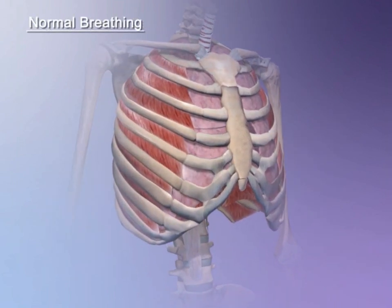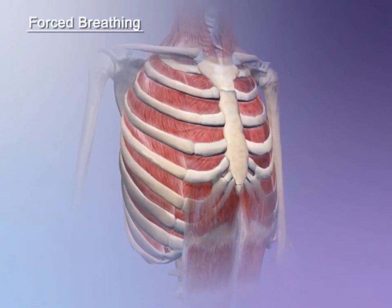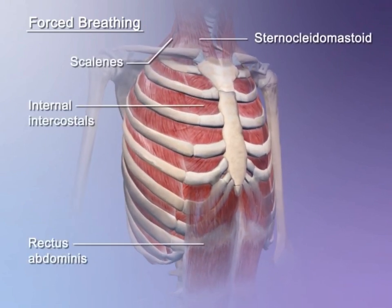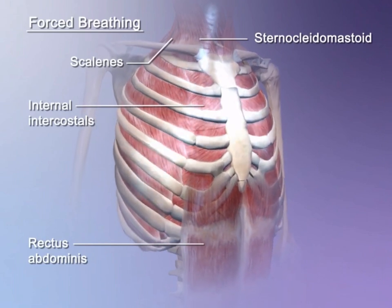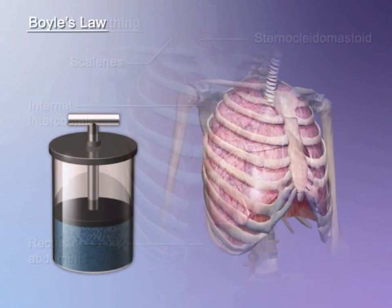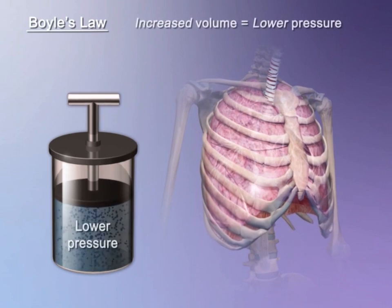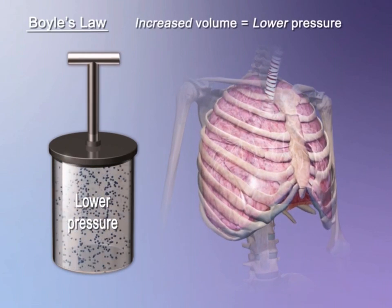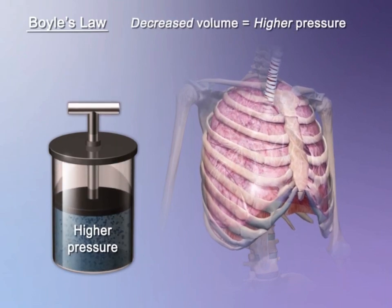The body's demand for more oxygen can change normal breathing to forced breathing. Additional muscles increase the changes in volume of the thoracic cavity so that more air can pass in and out more rapidly. This concept of an inverse relationship between your thoracic volume and thoracic pressure is, as you can see, what drives inhalation and exhalation.